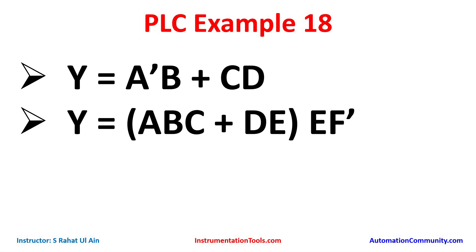For inputs A, B, C, D, and E we will use normally open contacts, and for F-not we will use a normally closed contact. ABC will be connected in series, and then D and E will be connected in series but in parallel with ABC.